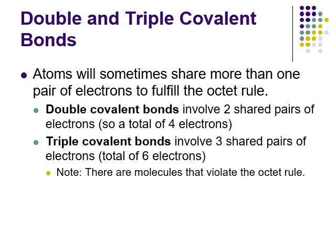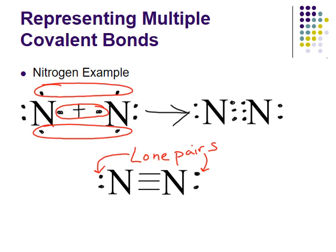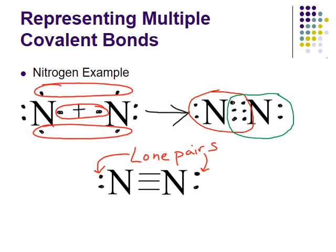Here's an example with nitrogen. Looking at the Lewis dot diagrams for nitrogen - connecting the dots to form pairs - each nitrogen ends up with a full octet, with six shared electrons between them forming a triple bond. Each nitrogen also has a lone pair of electrons.